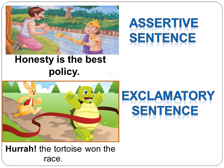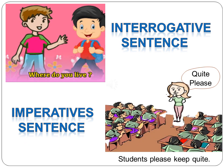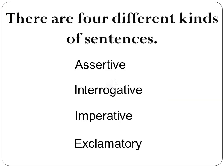'Honesty is the best policy' is an assertive sentence. 'Hurrah, the tortoise won the race' is an exclamatory sentence. 'Where do you live?' is an interrogative sentence. And 'Children, please keep quiet' is an imperative sentence. Children, there are four different kinds of sentences. They are: assertive, interrogative, imperative, and exclamatory.